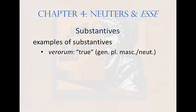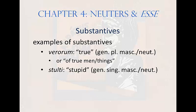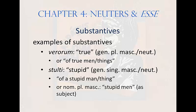Another example: verorum. Verus means true, and the orum ending shows the adjective is genitive plural, masculine or neuter. As a substantive it means of true men or of true things — context will dictate which makes better sense. And one more: stulti, meaning stupid, second declension genitive singular masculine or neuter, or nominative plural masculine. Without a noun to modify, it can mean of a stupid man, of a stupid thing, or — if nominative plural — stupid men, functioning as the subject of the sentence.